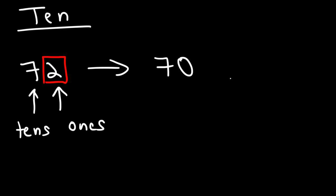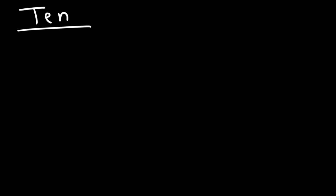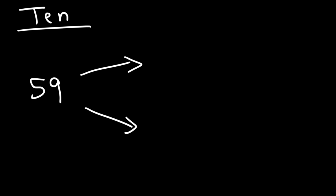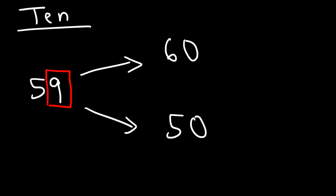So let's try another example. Round 59 to the nearest ten. We have two options: either we round it up to 60 or we round it down to 50. Well, looking at nine — nine is greater than five, so we're going to round it up to 60.